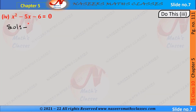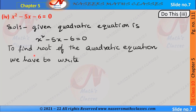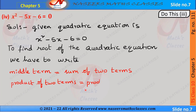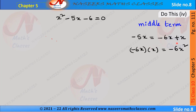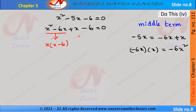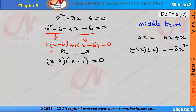The fourth problem is x² - 5x - 6 = 0. We have to find the roots by writing the middle term as the sum of two terms whose product equals the product of the x² term and the constant term. The middle term -5x is written as -6x + x, and their product gives -6x². The equation becomes x² - 6x + x - 6 = 0. In the first two terms, x is common, giving x(x - 6). In the next two terms, 1 is common, giving 1(x - 6).